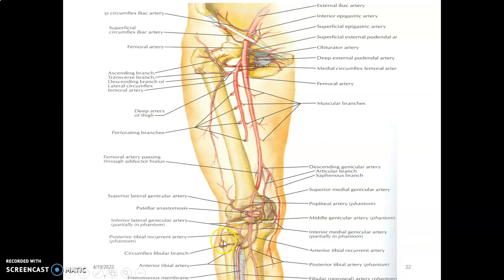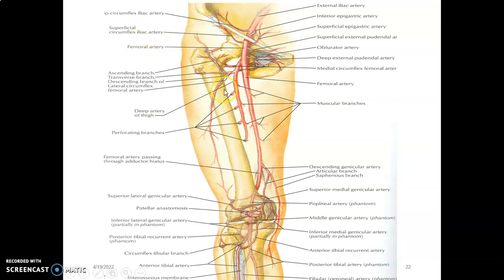You can see it going upwards, and a circumflex branch from the peroneal artery. So we have superior lateral and superior medial genicular artery, then inferior lateral and inferior medial genicular artery, and the middle genicular — those five are from the popliteal artery. We also have the anterior tibial recurrent, circumflex fibular branch, a descending genicular branch from the femoral artery, and a descending branch from the lateral circumflex femoral artery that goes downwards to participate in the genicular anastomosis.